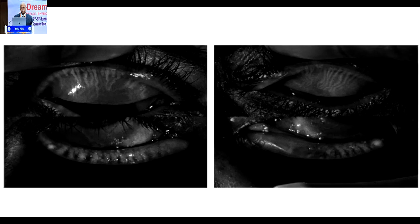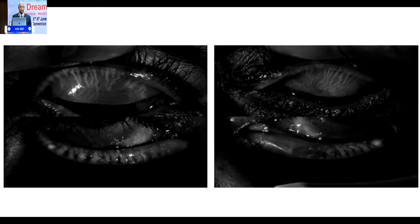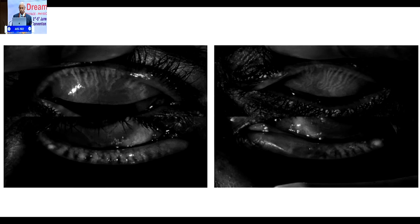Don't think you see meibomian gland dysfunction only in older age groups of 40, 50, or 60. We do see meibomian gland dropout and all weird shapes and sizes in teenagers these days, because of lack of blinking reflexes or partial blinks where the two lids do not meet together with force. This leads to prolonged stasis in the meibomian glands, causing meibomian gland dysfunction — you're seeing it in much younger age groups too.